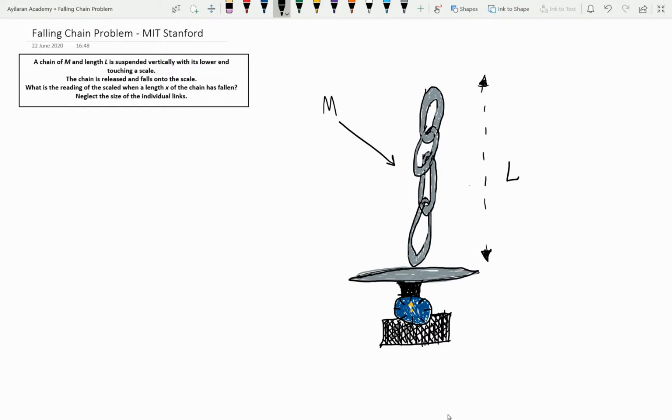This is the falling chain problem and the statement that the problem gives is that a chain of mass M and length L is suspended vertically with its lower end touching a scale. The chain is released and falls onto the scale. What is the reading of the scale when a length X of the chain has fallen?